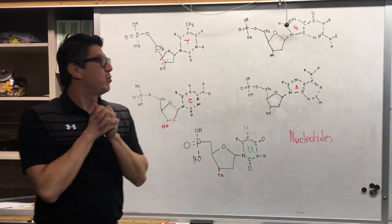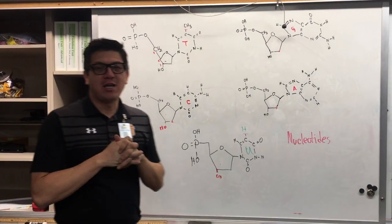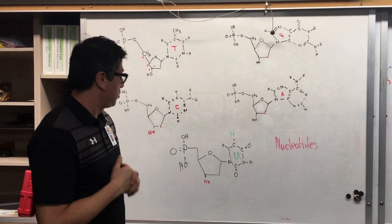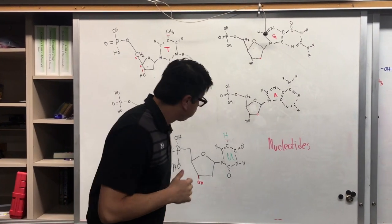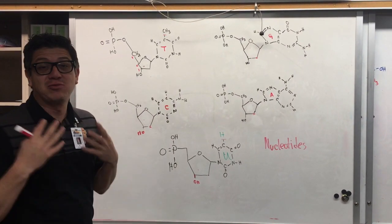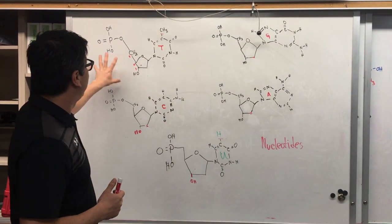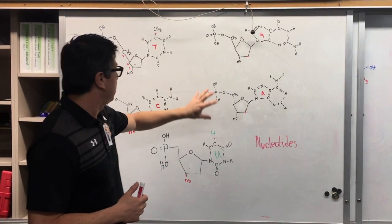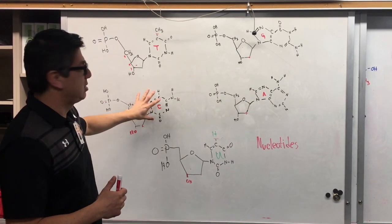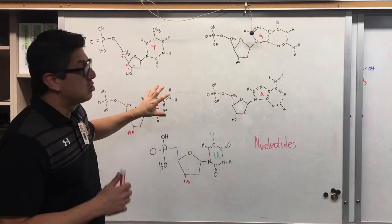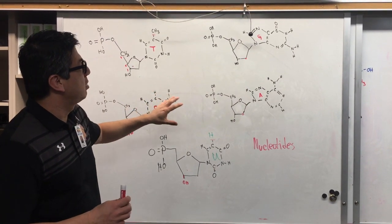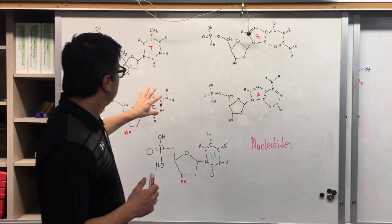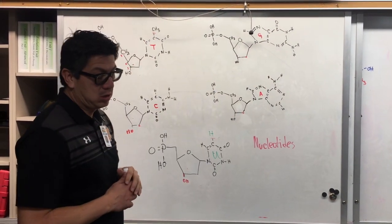Welcome back guys. What we want to do today is talk about nucleotides and review the structure. Remember that DNA has four different nucleotides: an adenine nucleotide, a guanine nucleotide, a thymine nucleotide, and a cytosine nucleotide. How do you tell the nucleotides apart? It's the nitrogenous bases that distinguish each nucleotide.